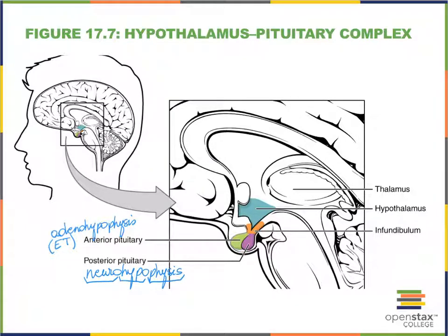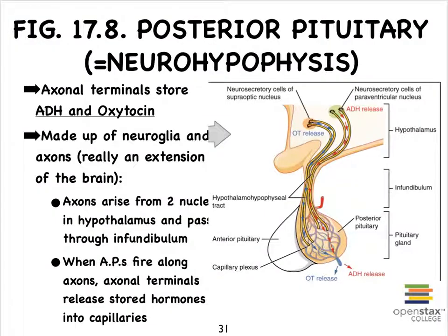The posterior pituitary is not like your typical gland — it's more like the adrenal medulla. Remember, the adrenal medulla is also a region in the adrenal gland that is not epithelial tissue, but rather modified post-ganglionic sympathetic fibers, or neurons. That's why it's easier to understand why the posterior pituitary is referred to as the neurohypophysis.